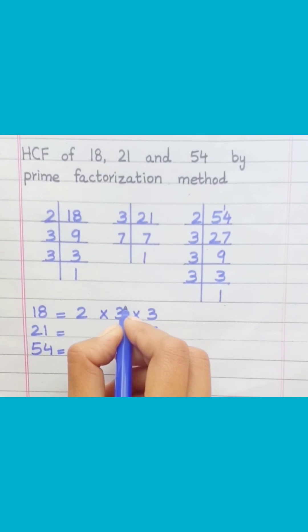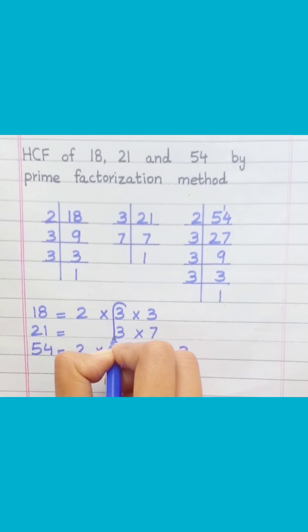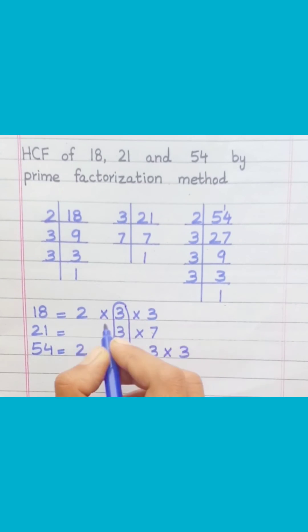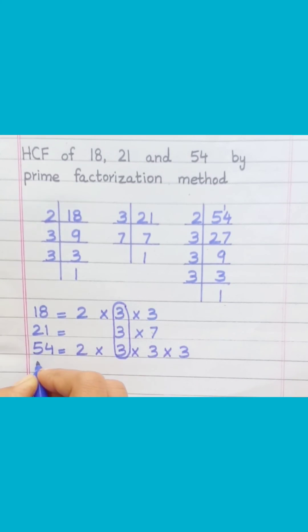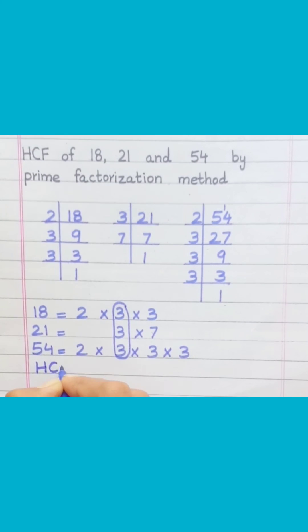Loop the factors that are common to all of the given numbers. HCF equals 3.